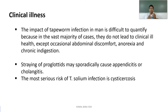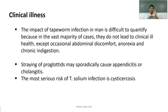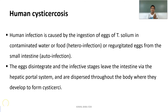Migration of proglottids can be observed, and it may sporadically cause appendicitis and cholangitis. The most serious risk for Taenia solium infection is cysticercosis — whenever it affects the brain, it results in epilepsy.